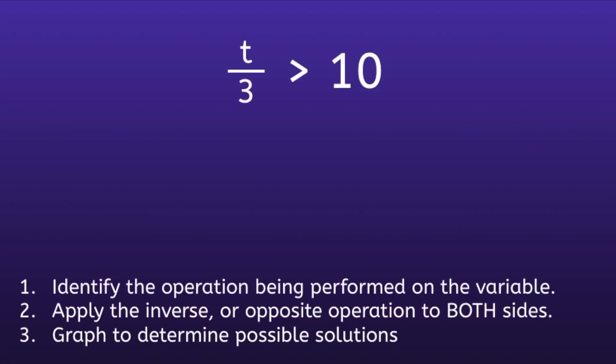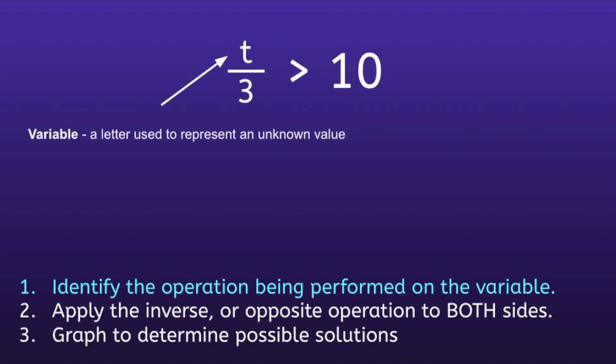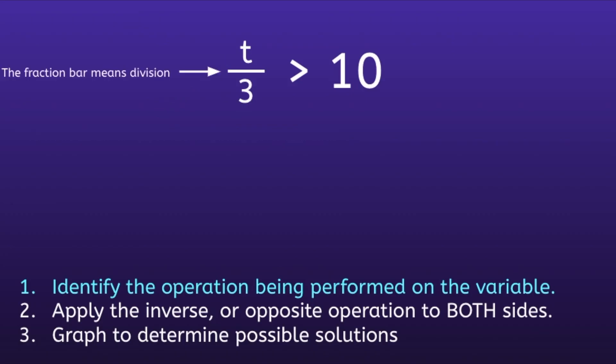Example 1. T over 3 is greater than 10. Step 1: Identify the operation being performed on the variable. In this inequality, the variable is t — a letter used to represent an unknown value. It's important to notice that the fraction bar means division, so t is being divided by 3.